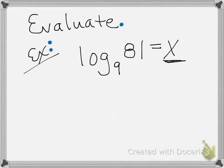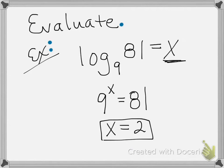So if I rewrite this, now I have 9 to the x power equals 81. That's what I get when I rewrite it. And then I just have to figure this out. What would the power have to be? 9 to what power equals 81? Well, 9 squared equals 81. So x has to be 2 to make this work. So log base 9 of 81 equals 2.